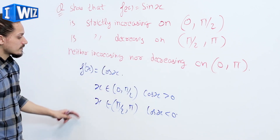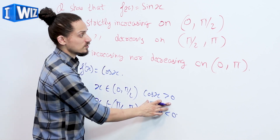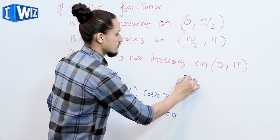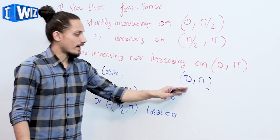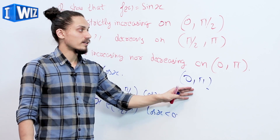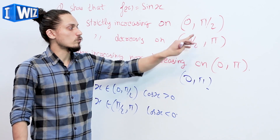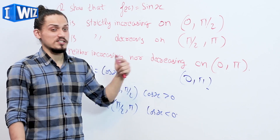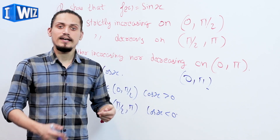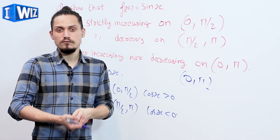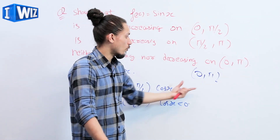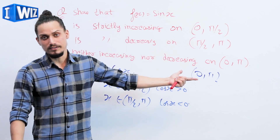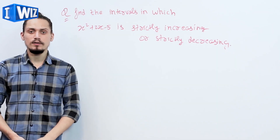For the interval (0, pi), we divide it into two parts: (0, pi/2) and (pi/2, pi). In the first part the function is strictly increasing, and in the second part it is strictly decreasing. So on the whole, this function is neither increasing nor decreasing on (0, pi).